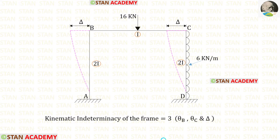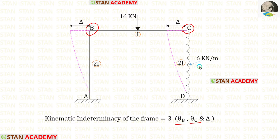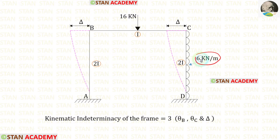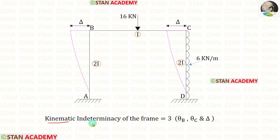Now let us find the kinematic indeterminacy of the frame. In joints B and C there will be slope. At joint B we have theta_B, and at joint C we have theta_C. Additionally, there will be sway. Since the loading is not symmetrical, the sway will occur towards the left side. So the kinematic indeterminacy of the frame is 3: slope theta_B, slope theta_C, and sway delta.